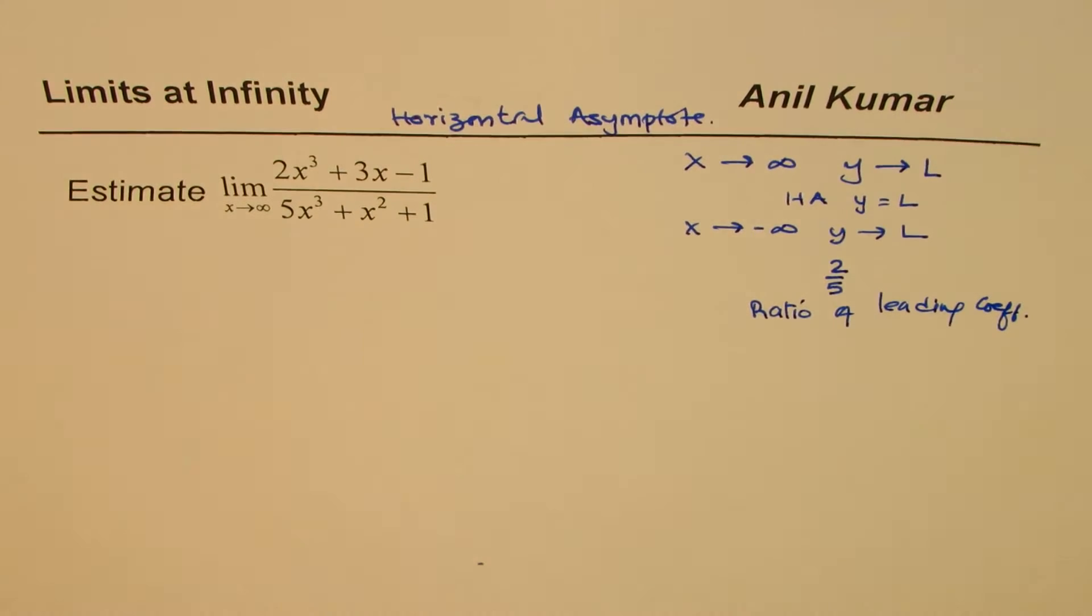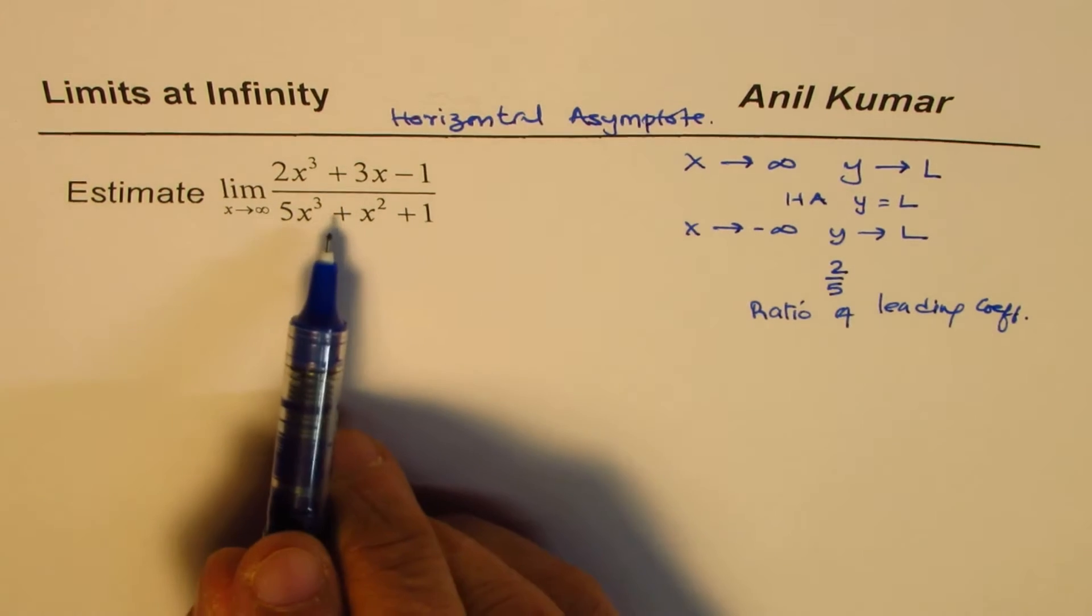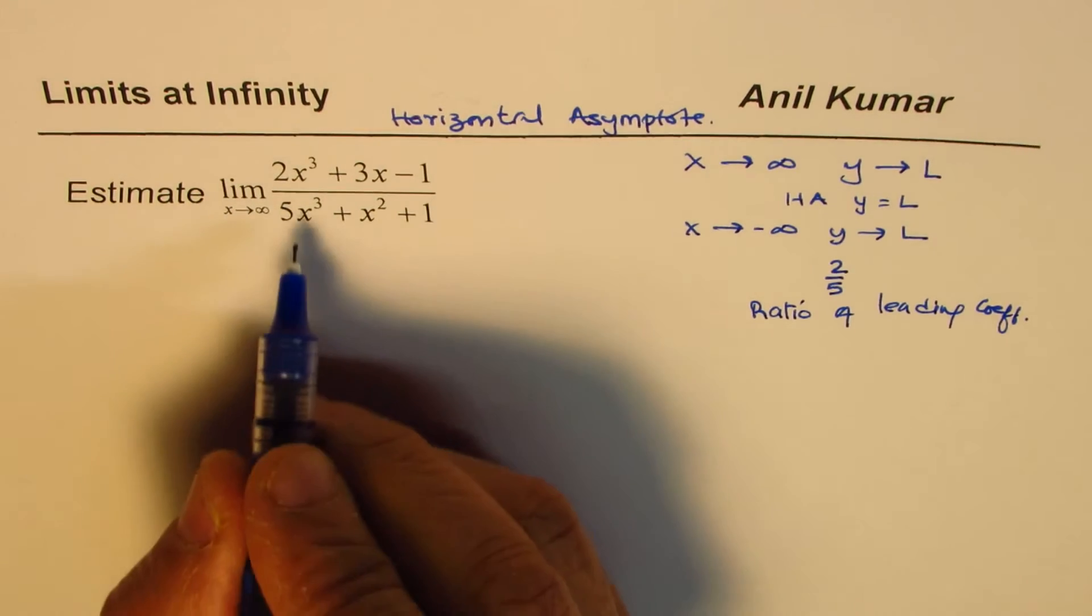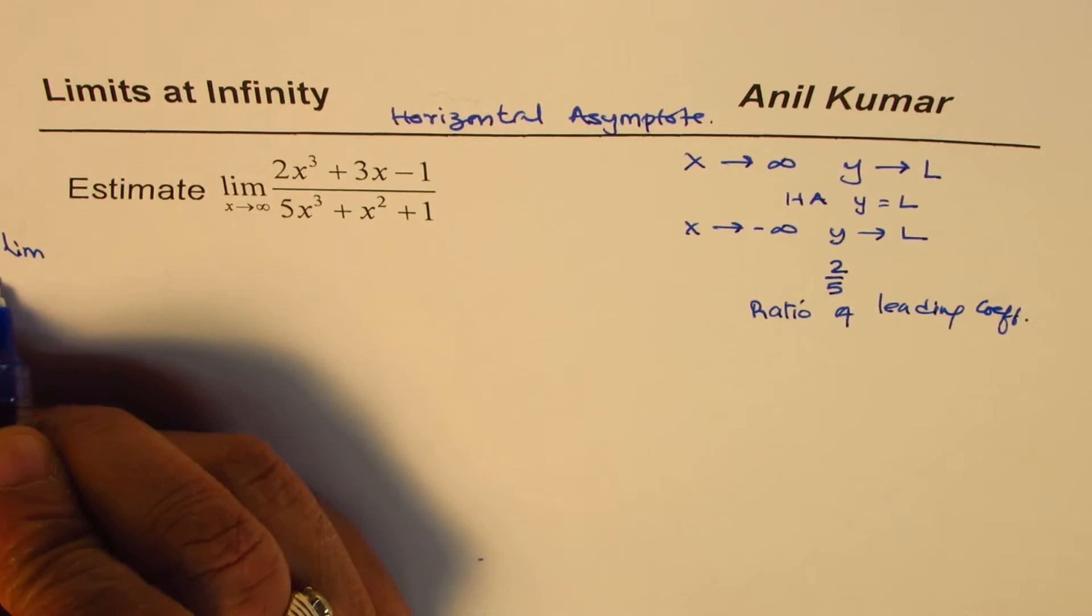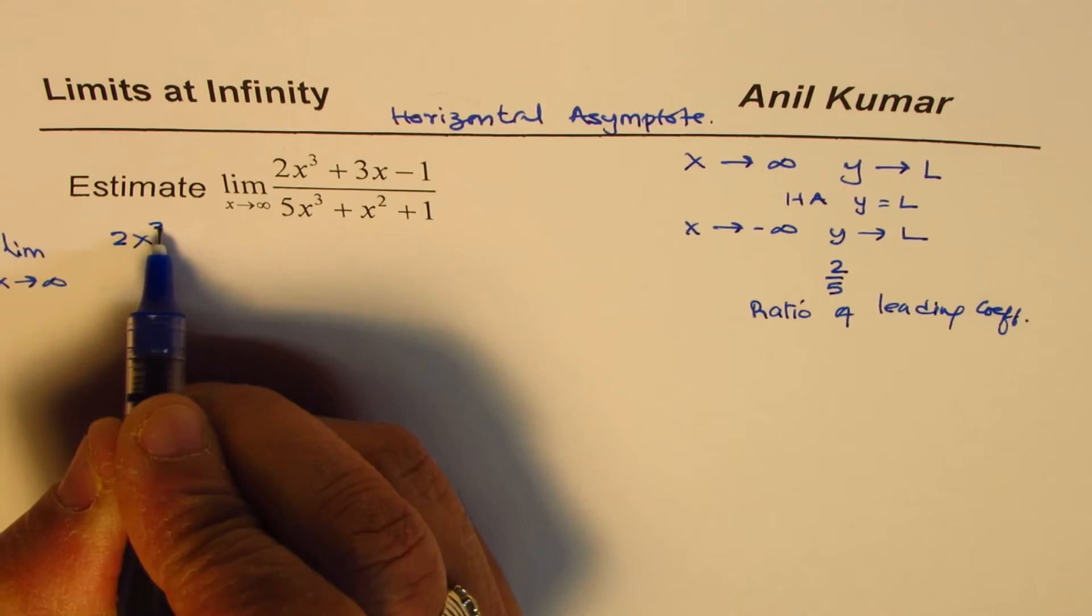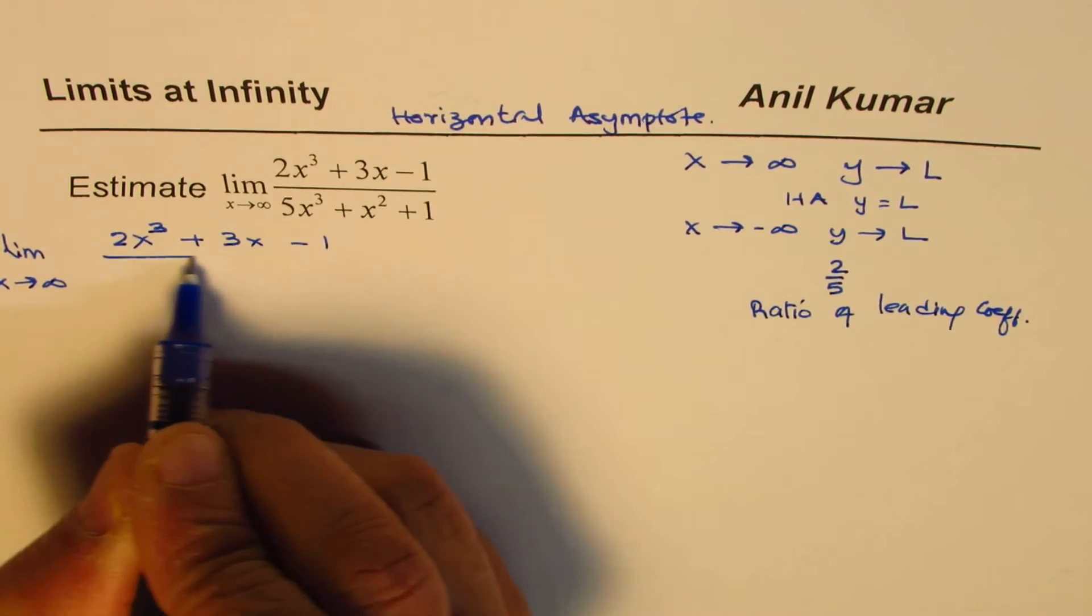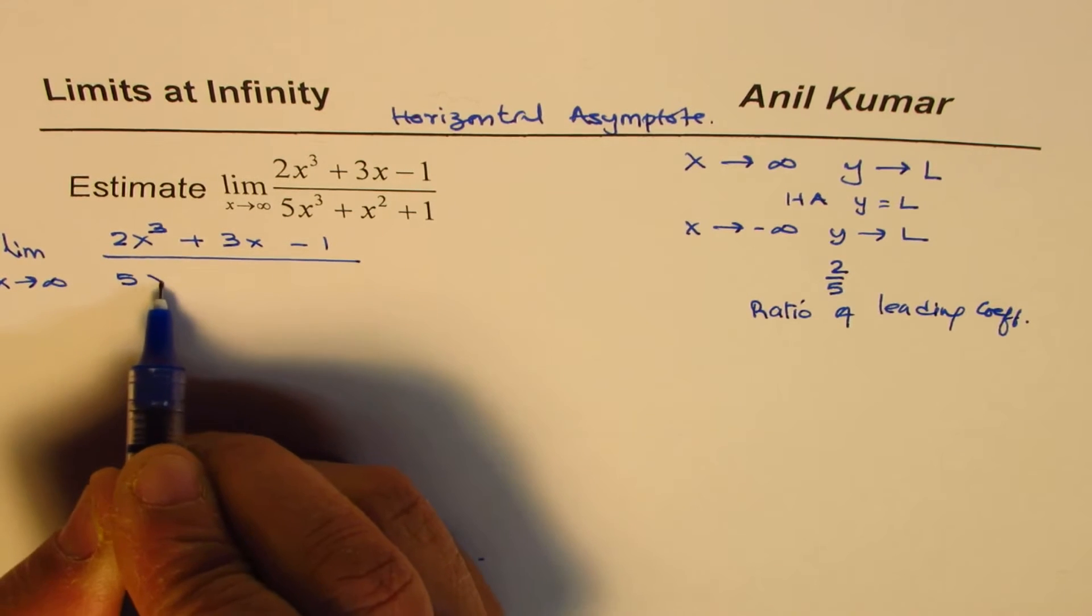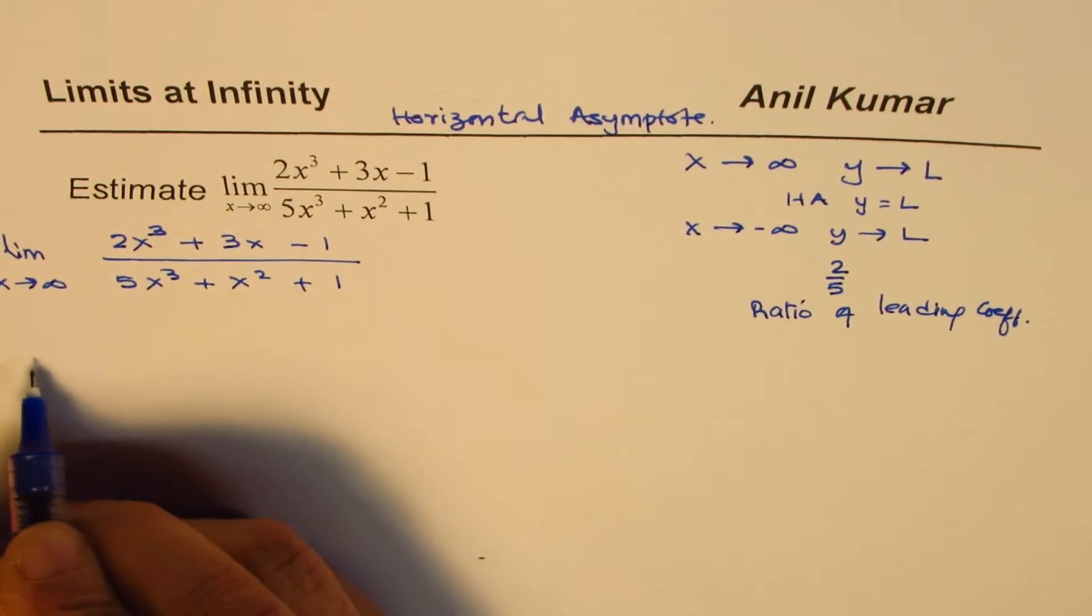Now let us see why do we get this answer always. You can always generalize the question, but the strategy remains the same. So let's begin to solve this. We have limit x approaches positive infinity, and the question is (2x³ + 3x - 1) divided by (5x³ + x² + 1).